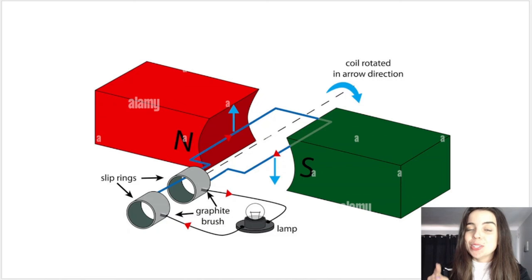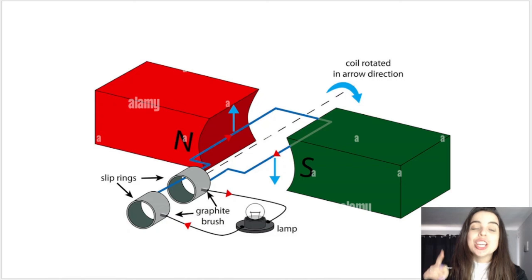So let's see if you can identify if these are generators or motors. Number one, this because it has the light bulb attached is a generator. You see there's no power source.